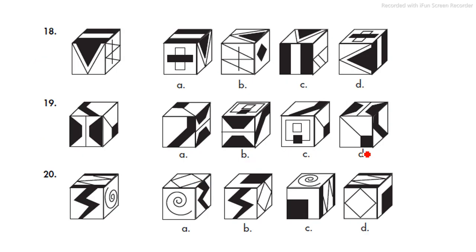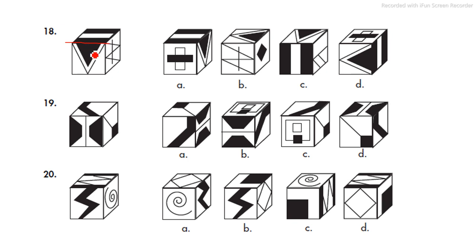Moving on to the next question. Here we see that in the top figure there is a zebra-crossing-like structure — black and white — and a triangle. The base of the triangle is coinciding with the black portion of the zebra crossing. These two figures coincide with black touching black, so we need to figure out which answer option has the same kind of relationship.